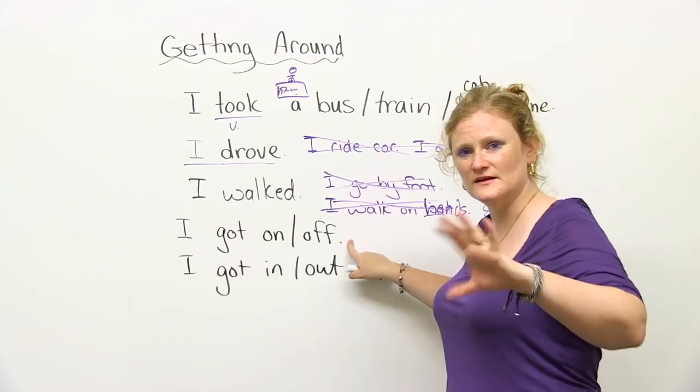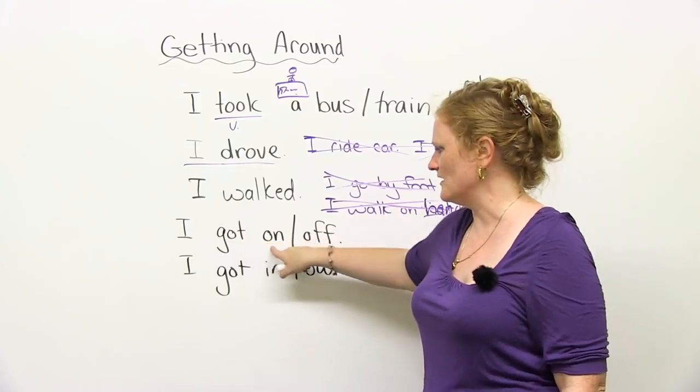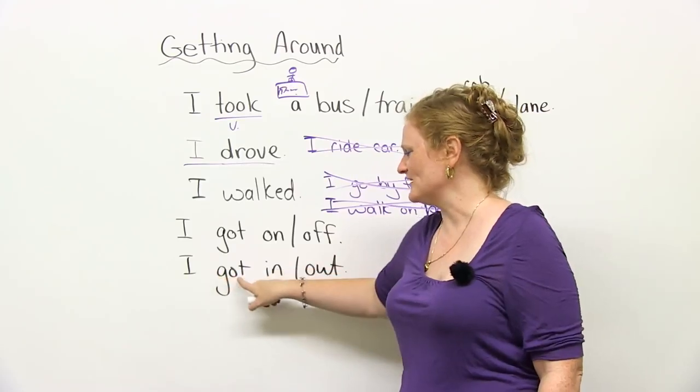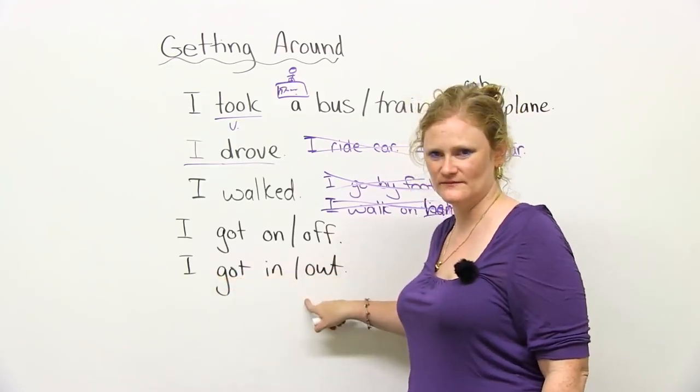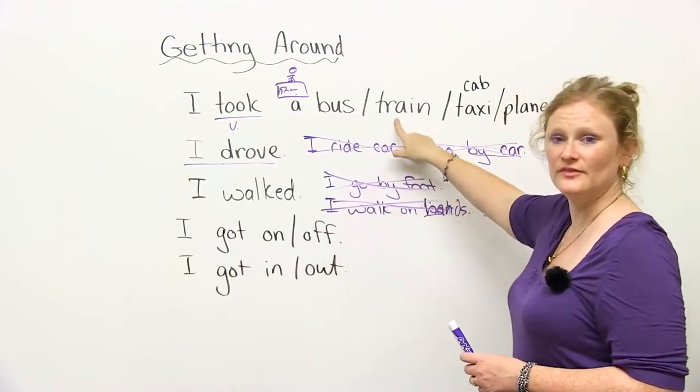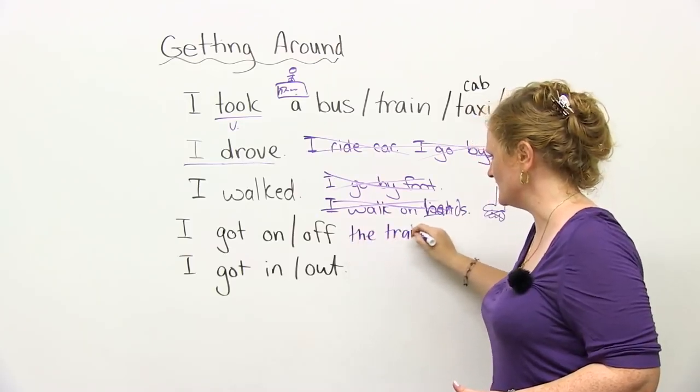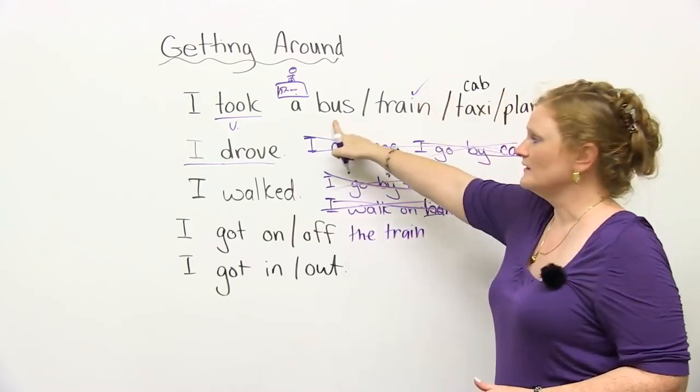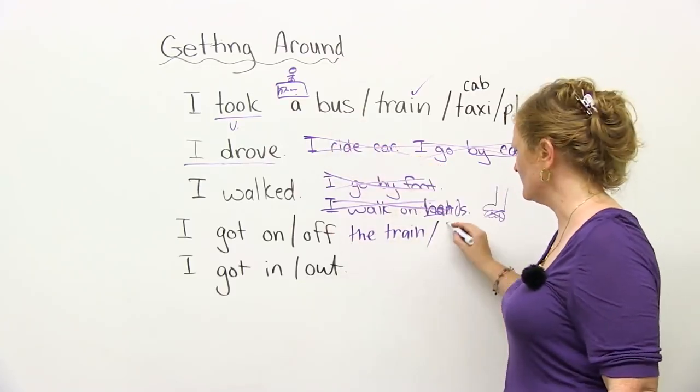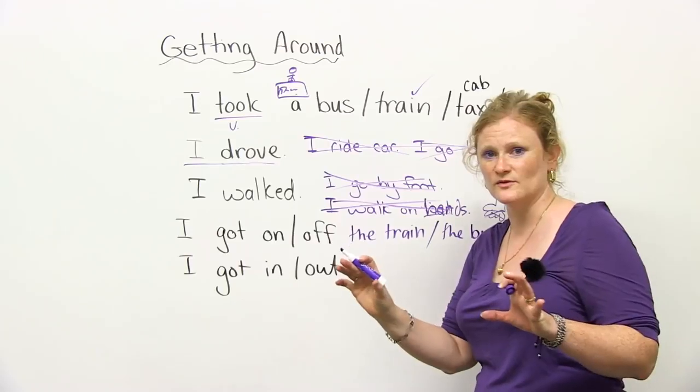Another thing that's really confusing in English, and I understand why, is when to use the phrasal verb, got on or got off, when to say, got in or got out. So as an example, we would say, I got off the train. Let's write that down. Or you can say, I got on the train. Also, we use this with a bus. So you can say, I got on the bus, and I got off the bus.